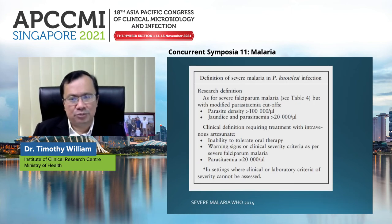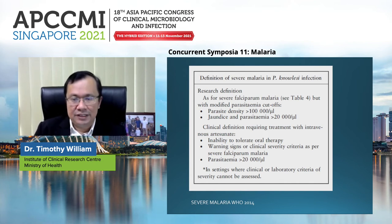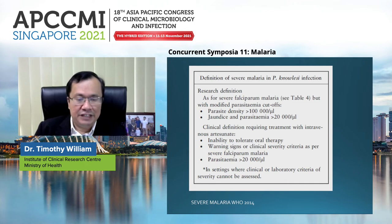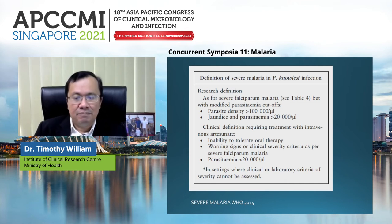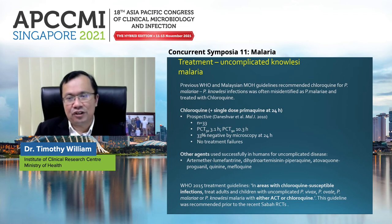The definition of severe P. knowlesi malaria is important because treatment differs. Treatment for severe malaria is intravenous artesunate. For P. knowlesi, the threshold of parasite density at which we give IV artesunate is not 100,000 per microliter but 20,000 per microliter in settings where laboratory criteria cannot be assessed.